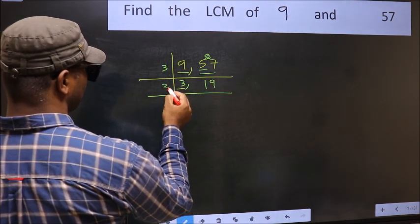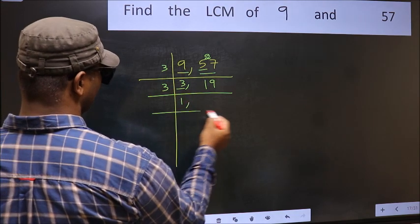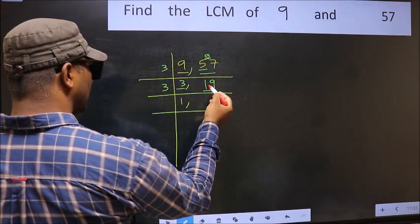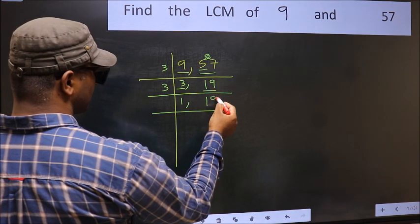Now here we have 3. 3 is a prime number, so 3 times 1 is 3. The other number, 19, not divisible by 3, so you write it down as it is.